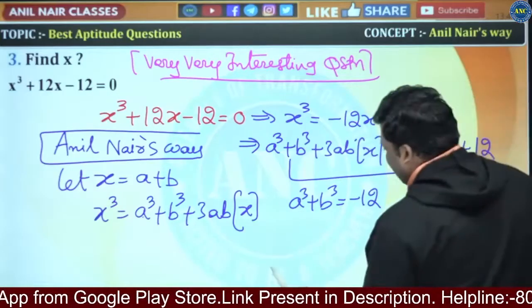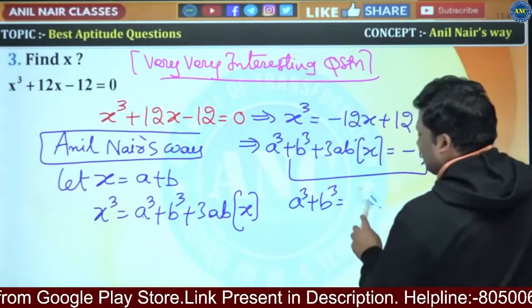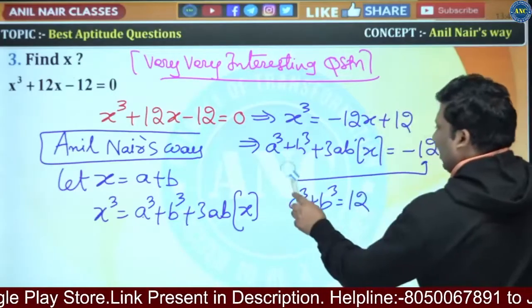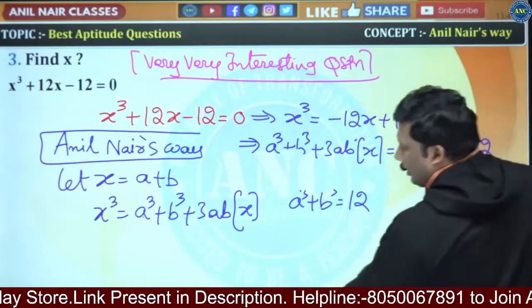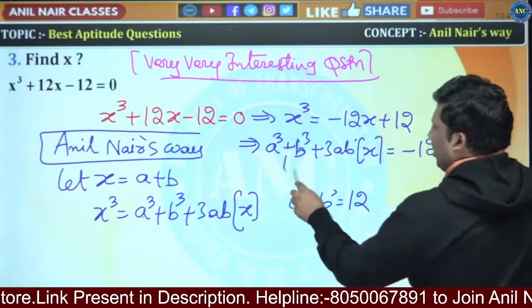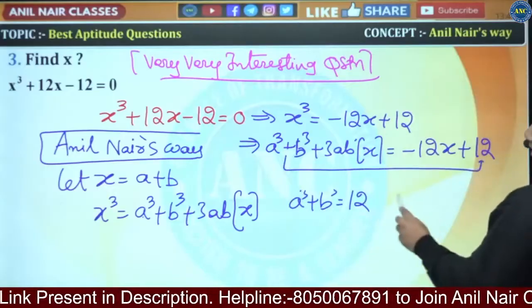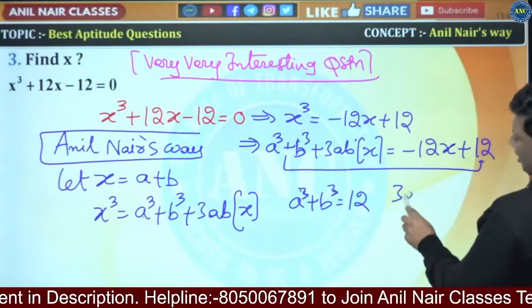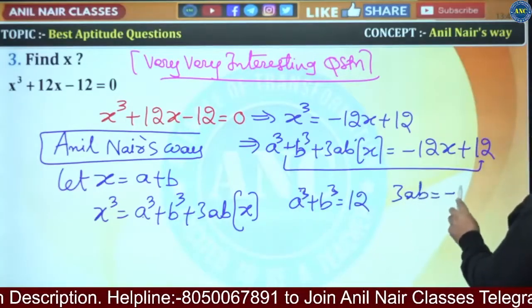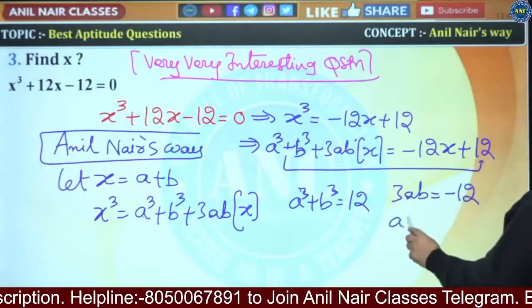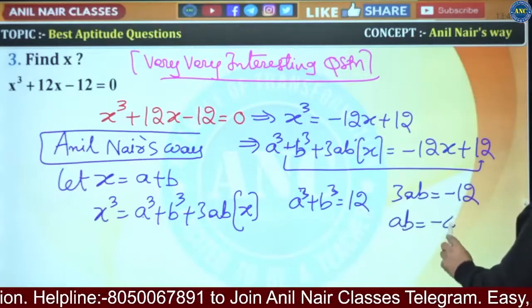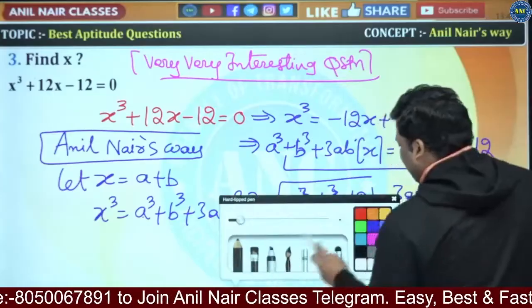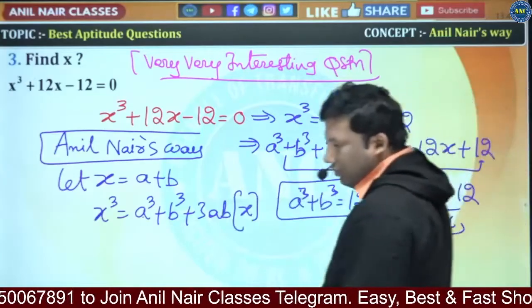a³ + b³ = 12 and 3ab = -12, so ab = -4. We have a³ + b³ = 12 and ab = -4. We need the value of x, which is a + b.